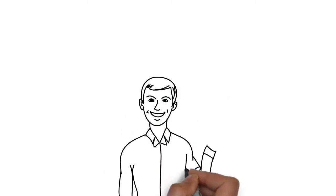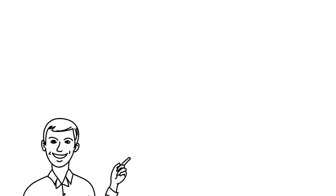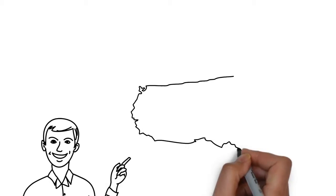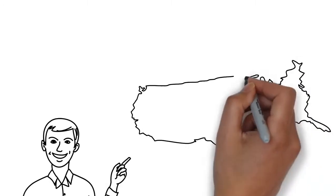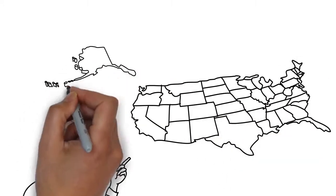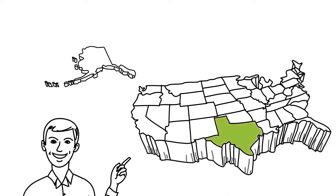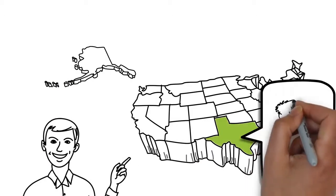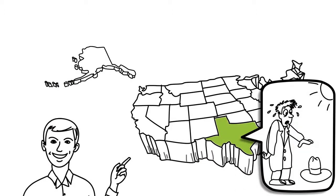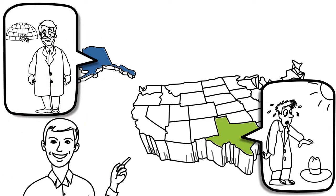Chris is an email marketer working hard to do great things for his company's email program. He wants to target subscribers in real time based on their local weather conditions. After all, the new extra warm wool coats from a top designer are not exactly ideal for customers in warmer climates, but are for many other weather conditions.